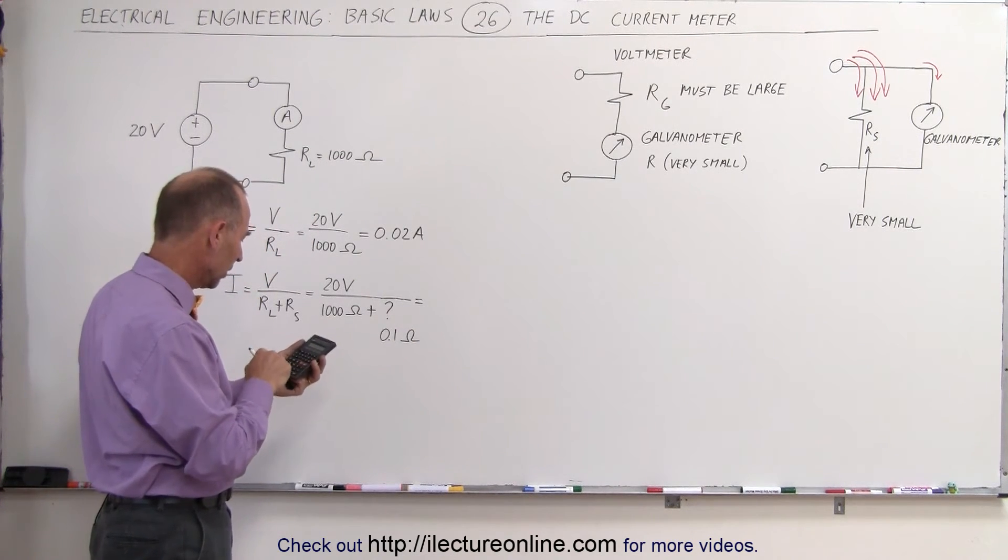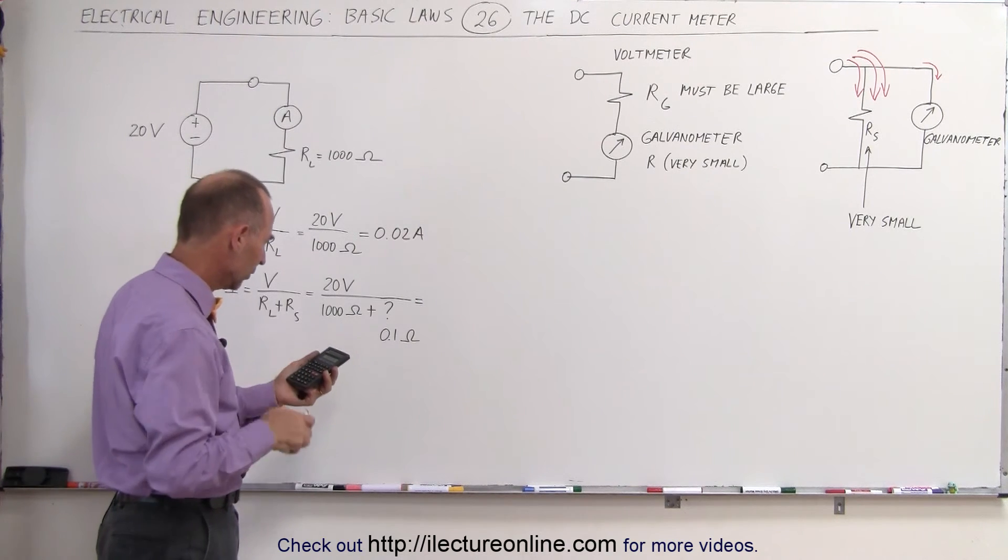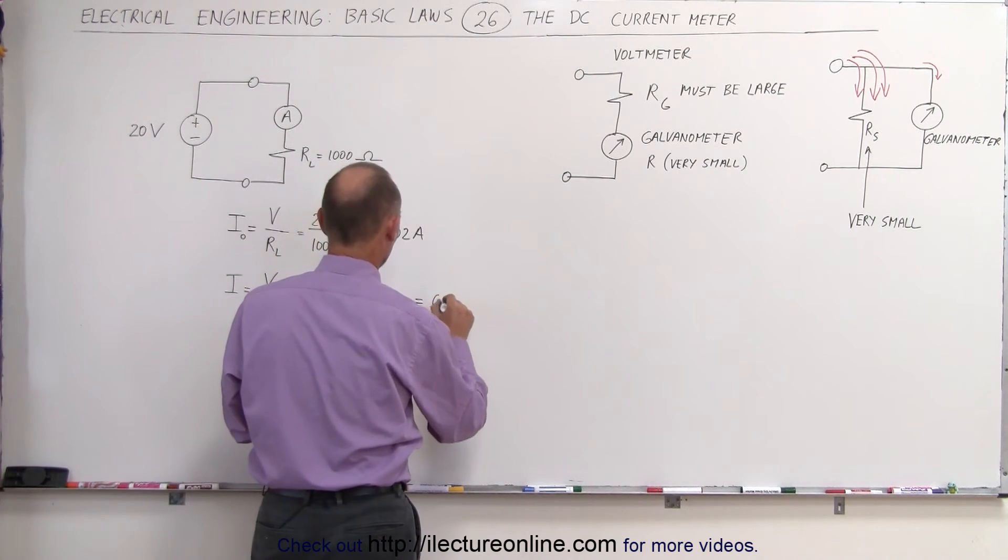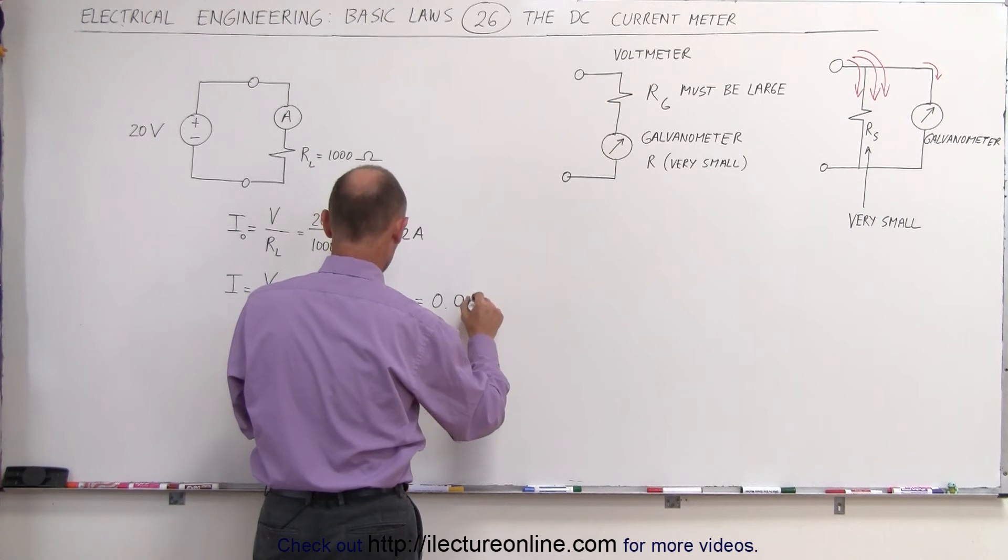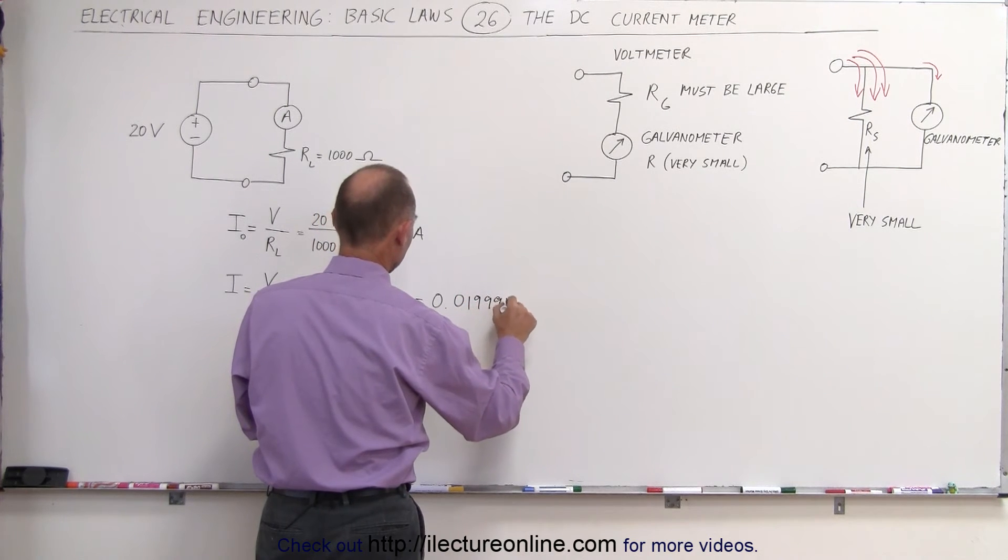20 divided by 1000.1 equals, now we have a current of 0.019998 amps.